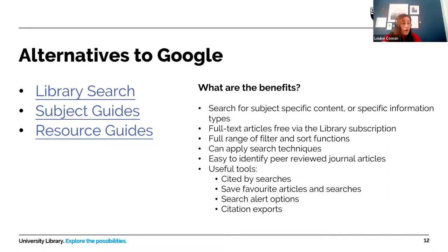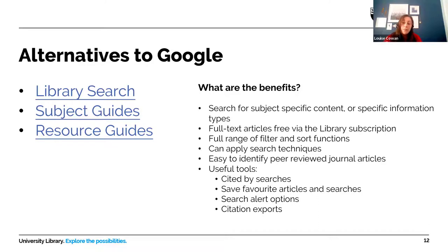These databases also have really good filter options, as Lorna was saying — they help you refine your search to get much more relevant results more quickly. They include all the useful tools that Google Scholar has: cited by searches in Scopus or Ebsco databases, saving favorite articles, saving searches, setting up alerts, citation exporting, and lots more. We strongly recommend you take a look at your subject guides and resource guides and use them together — use Google as a scoping tool, for finding things not available through the library and for getting keywords, then go into academic databases to save time and find all the relevant information.